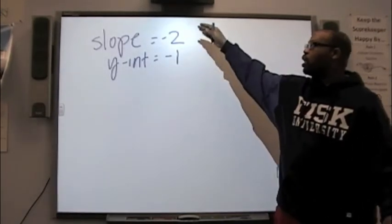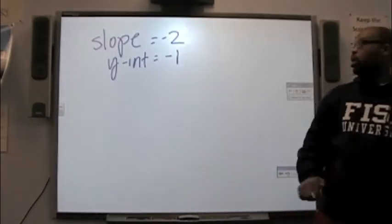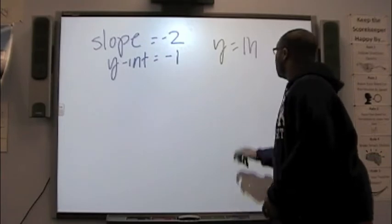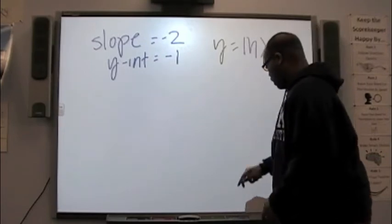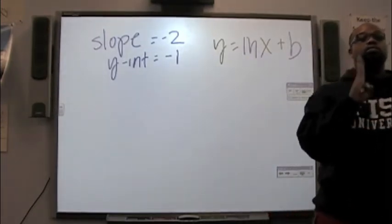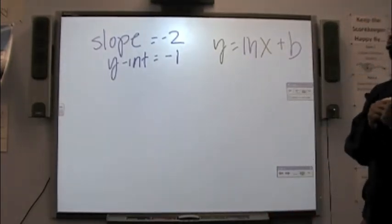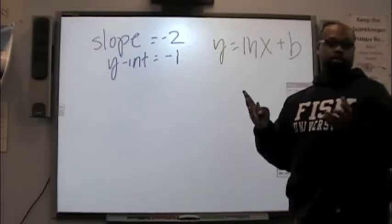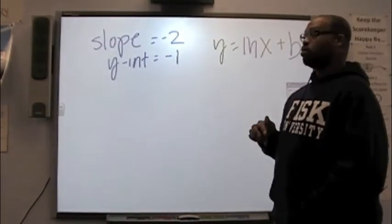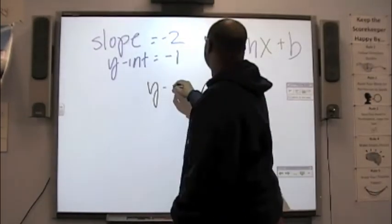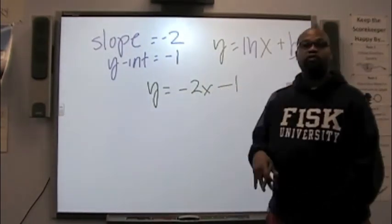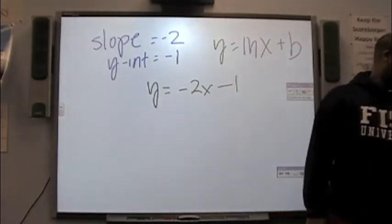All right, so now, we have a slope of negative 2, a y-intercept of negative 1. Remember the form, y equals mx plus b. We're going to substitute those things in. What are we going to put in for m? Go ahead. You're going to put in a negative 2. And what are we going to put in for b? Negative 1. So, I'm going to have y equals a negative 2x minus 1, or as you said before, plus a negative 1. Either one is fine.